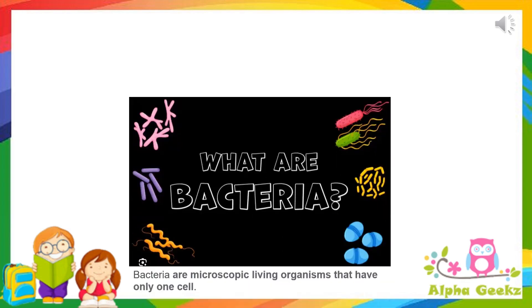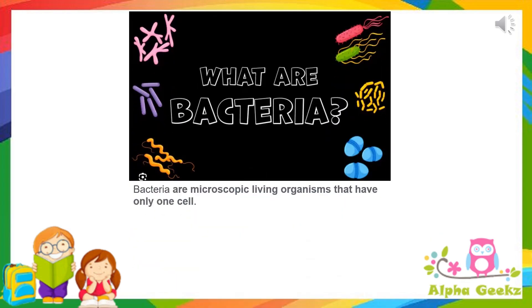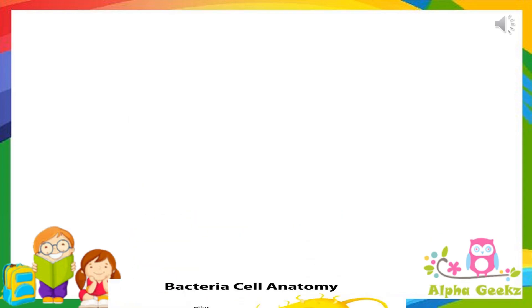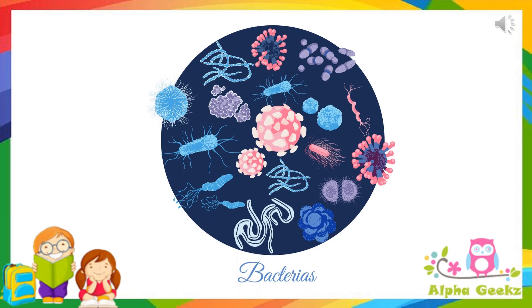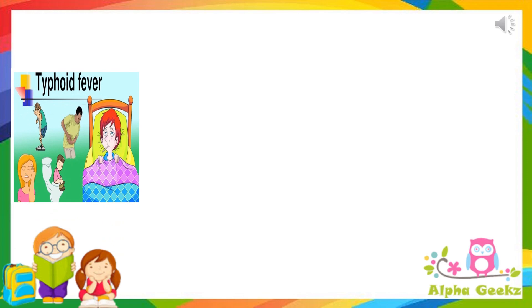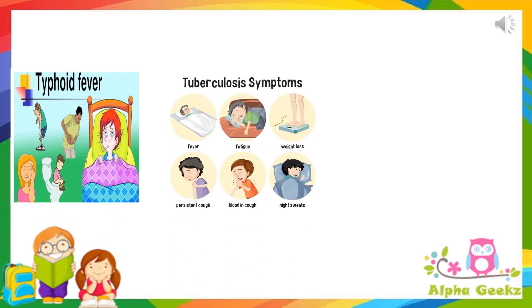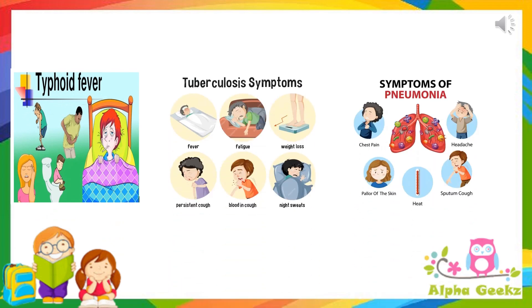Bacteria are single cell organisms. Bacteria come in different shapes. They can be comma shaped, rod shaped and others might look like spirals or round. Harmful bacteria cause diseases like typhoid, tuberculosis, pneumonia, etc.